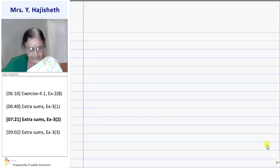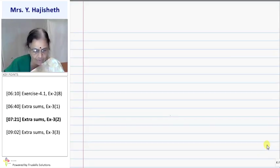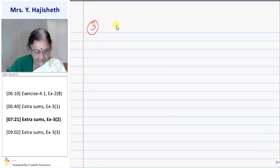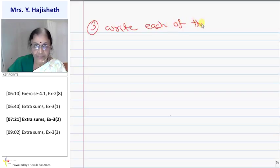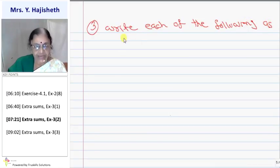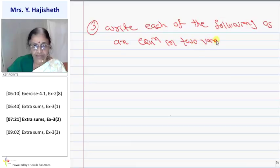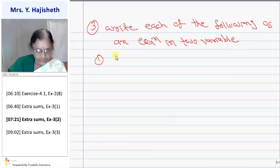Now there is another extra sum. Write each of the following as an equation in two variables. So any equation in one variable needs to be expressed as a linear equation in two variables. First example: y equals two.